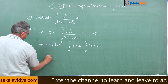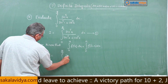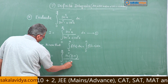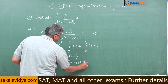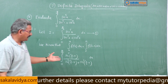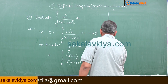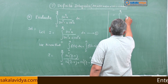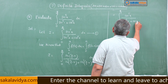Applying the property, I becomes the integral from 0 to π/2 of sin(π/2 - x)^5 divided by [sin(π/2 - x)^5 + cos(π/2 - x)^5] dx. Using the complementary angle identity sin(90° - θ) = cosθ, this becomes the integral from 0 to π/2 of cos^5(x) / [sin^5(x) + cos^5(x)] dx — call this equation 2.